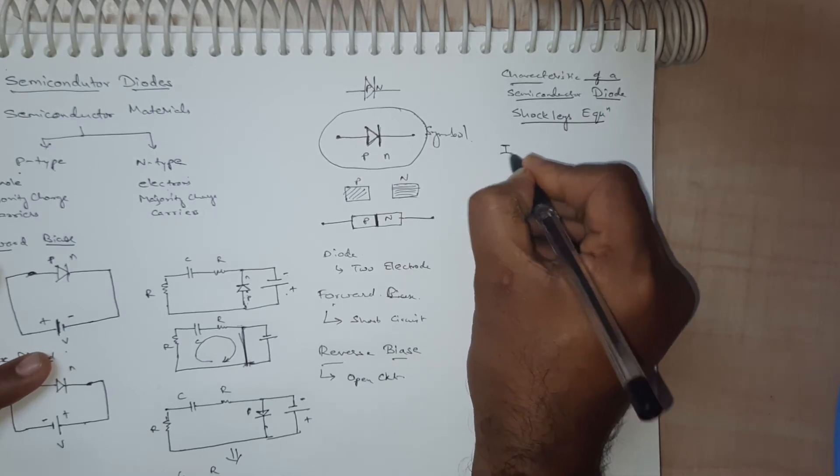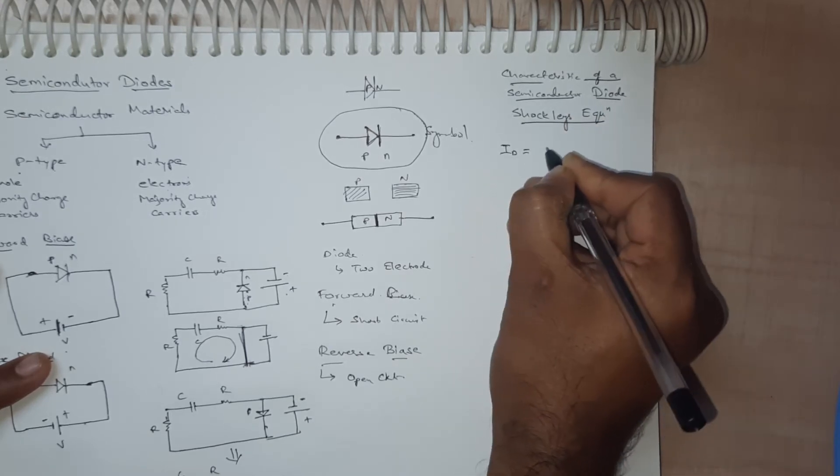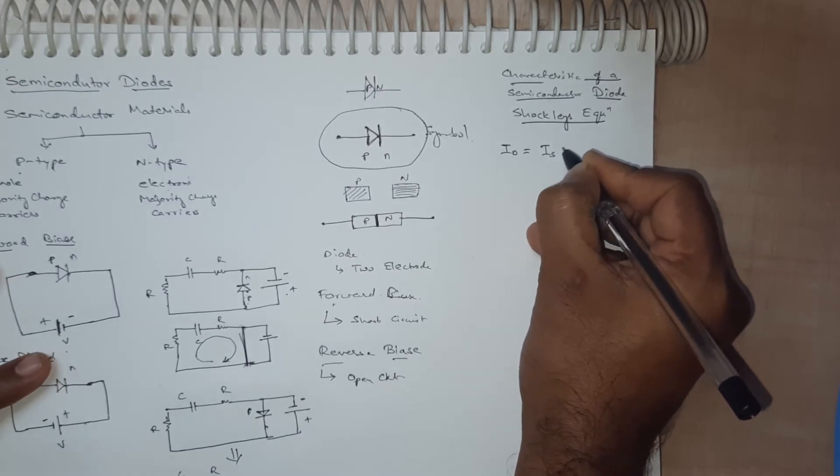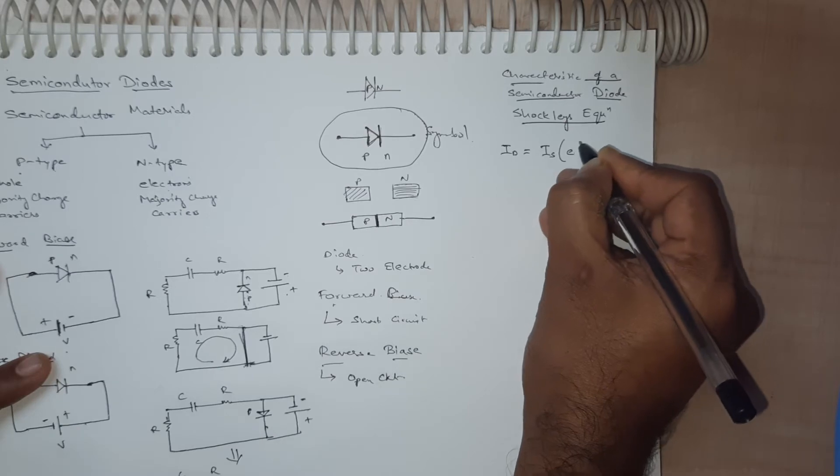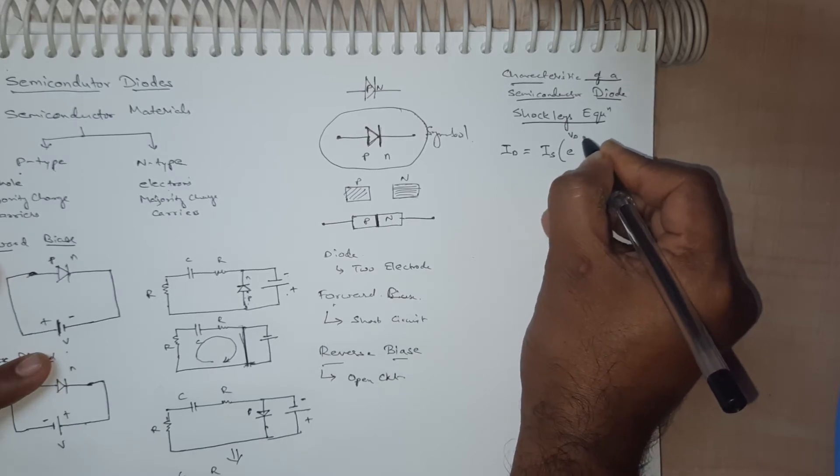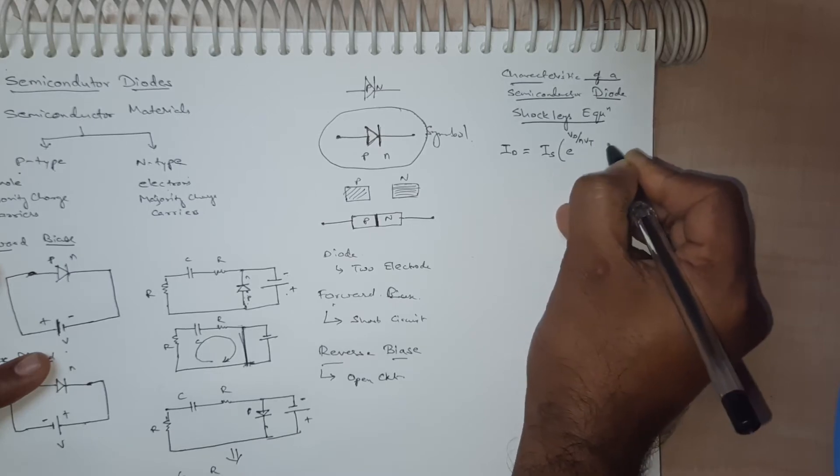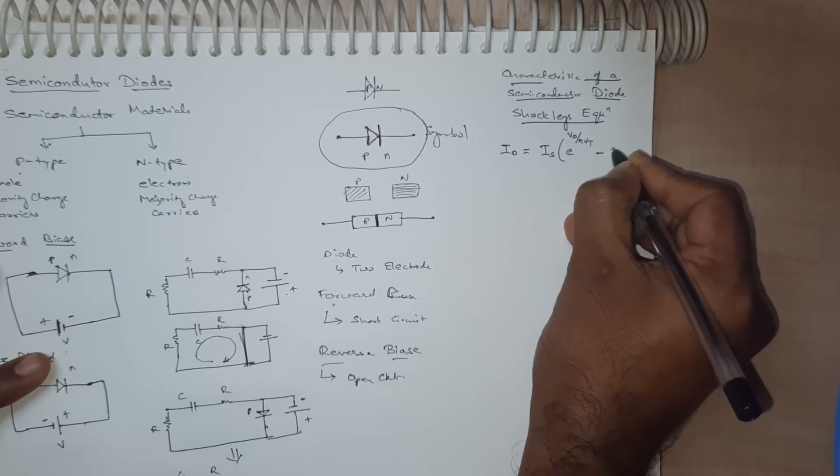Which is given by id equal to is into e to power vd by nvt minus 1.